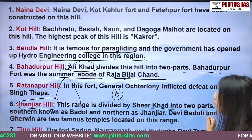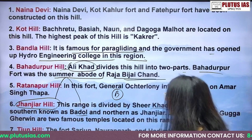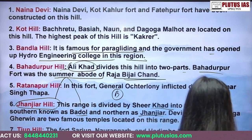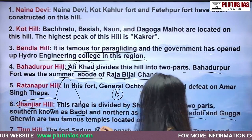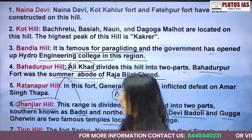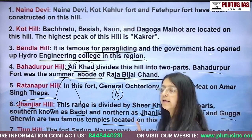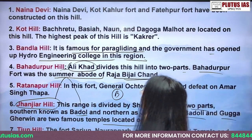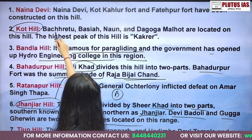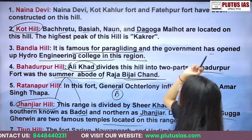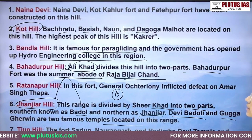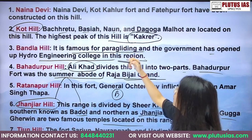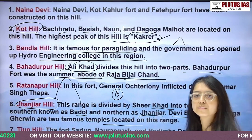Janjiyar Hill is divided by Seer Khad into two parts — the southern part is called Badol and the northern part is called Janjiyar. The Devi Bhadoli and Guga-Gervin temples are famous here. Next is Coat Hill; the highest peak of this hill is Kakreer. Bilaspur is also a hilly district, though less so compared to Una or Hamirpur which are bordered mainly by plain areas.